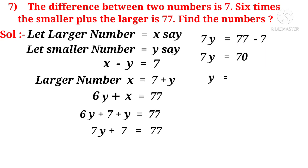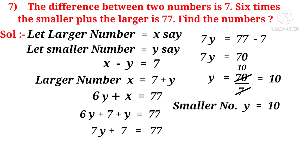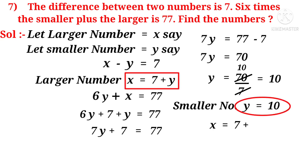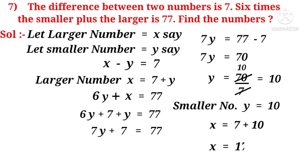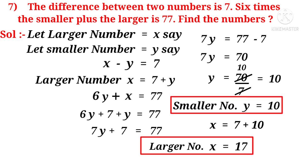Y is equal to 70 by 7, because multiplying 7 when transposed to the right hand side, it becomes divided by 7. On simplification, 70 by 7 is 10. So, the smaller number Y equals 10. Now, put Y equals 10 in X equals 7 plus Y. Then, X equals 7 plus 10, which is 17. So, the larger number X equals 17 and the smaller number Y equals 10.